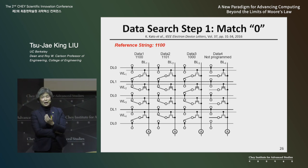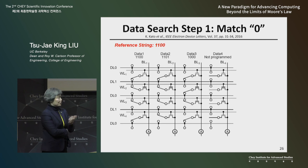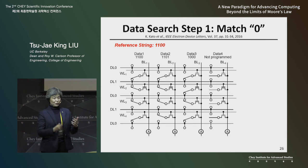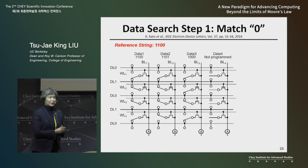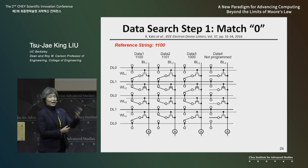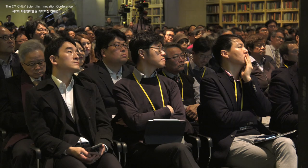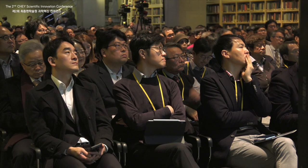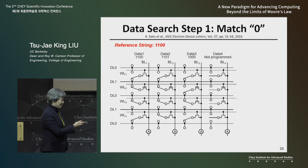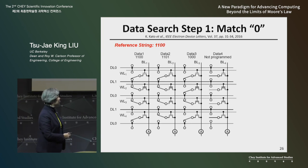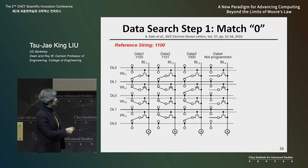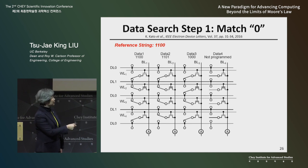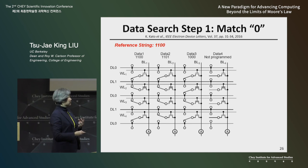One of the common functions a chip performs is to match information — for example, to identify an address or recognize an image. That means we want to do some matching function. Let's say we would like to find which column has a matching string: one, one, zero, zero. It only takes two steps.